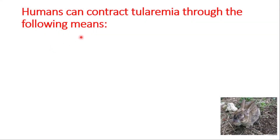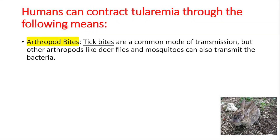Humans can contract tularemia through the following means. One way is through arthropod bites — tick bites are a common mode of transmission, but other arthropods like deer flies and mosquitoes can also transmit the bacteria.